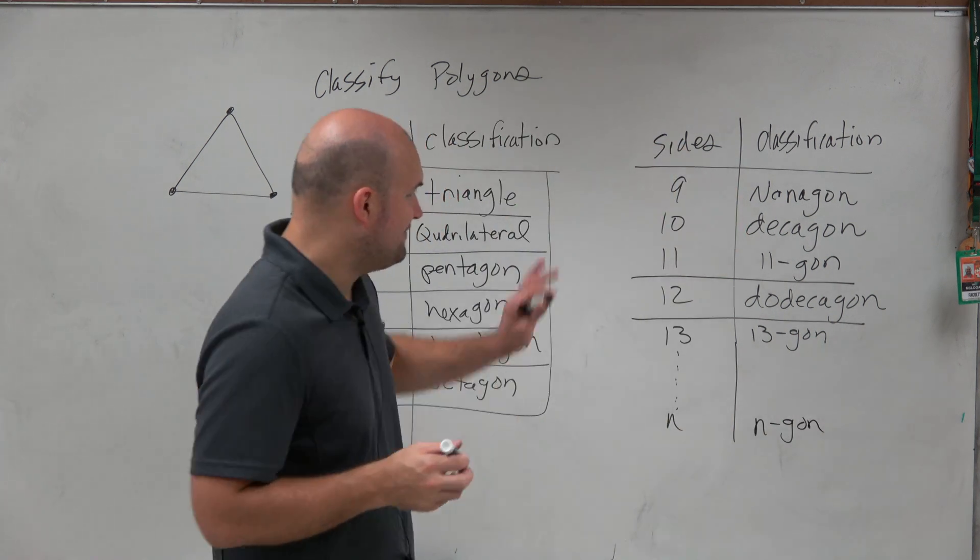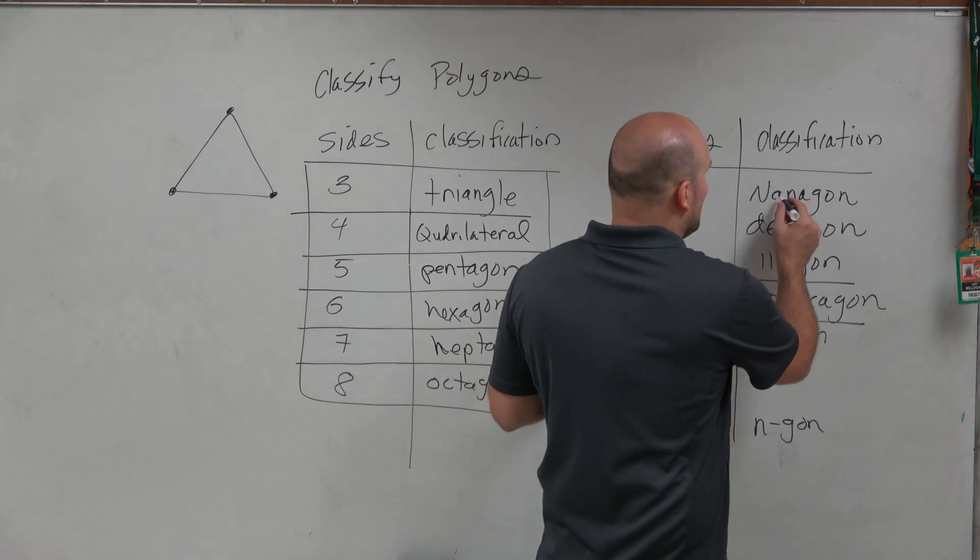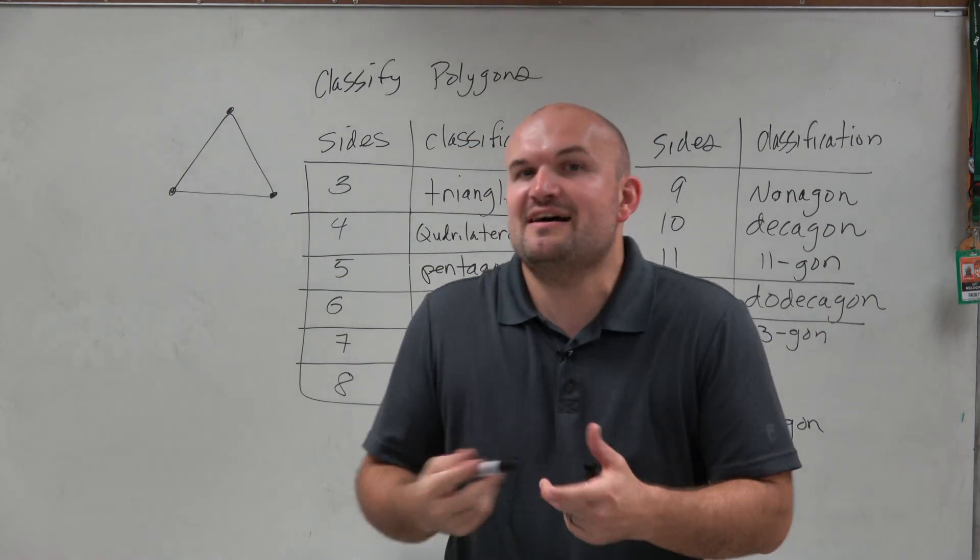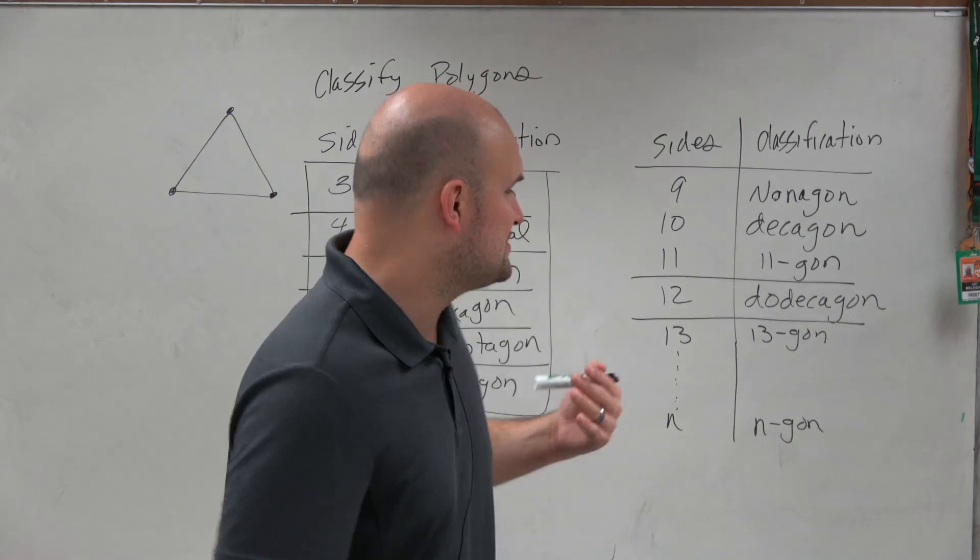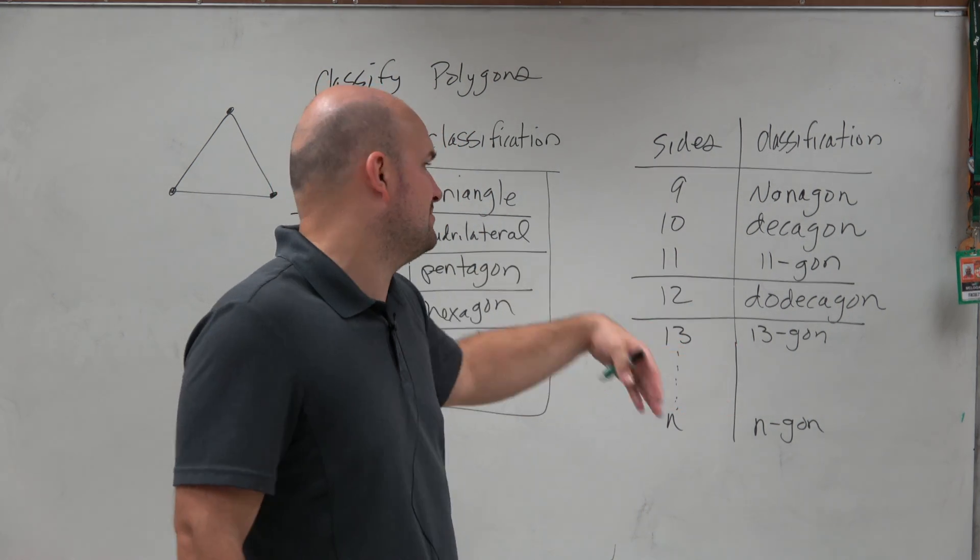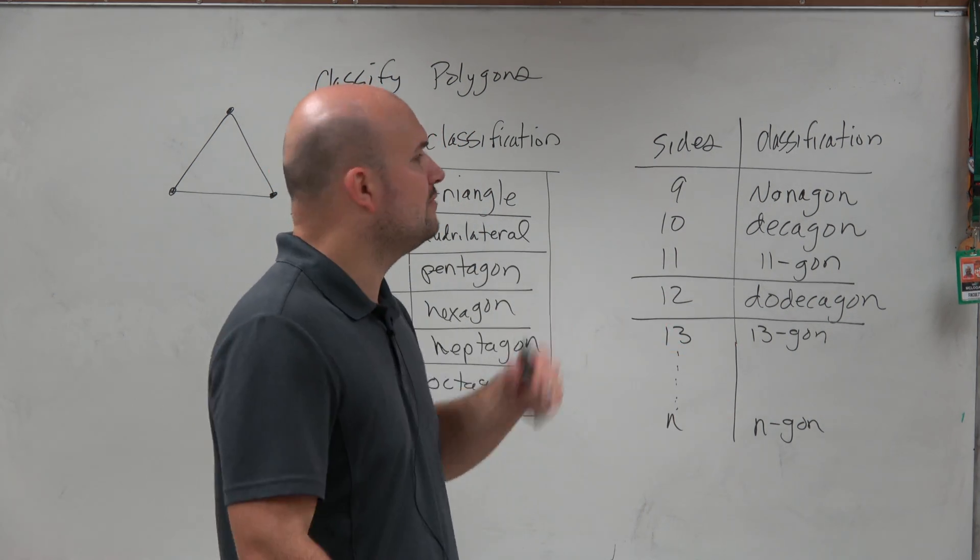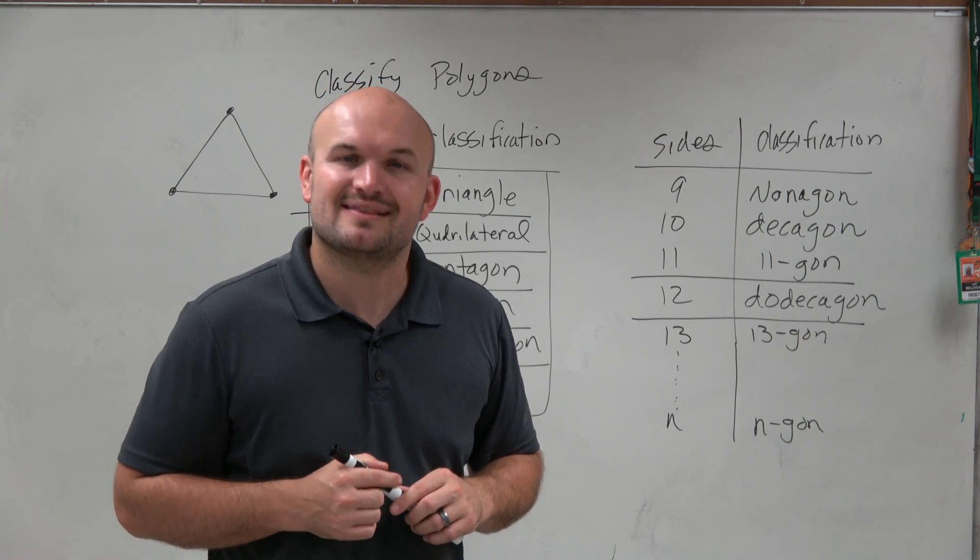So we have this classification that's going to go through your number of sides. But you can also always call them a 5-gon or a 4-gon. But usually we have quadrilateral and pentagon. So we usually like to reserve those n-gons for a number of sides that are going to be larger than twelve or for eleven. So there you go, ladies and gentlemen. That is your basics for classifying polygons. Thanks.